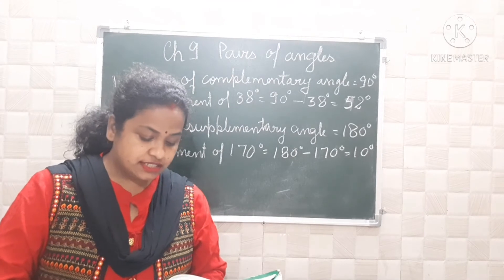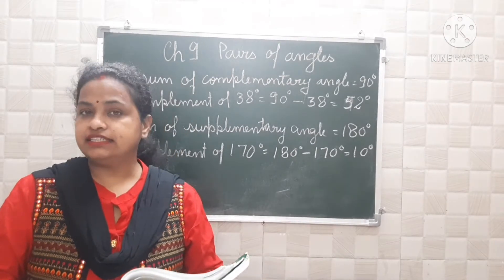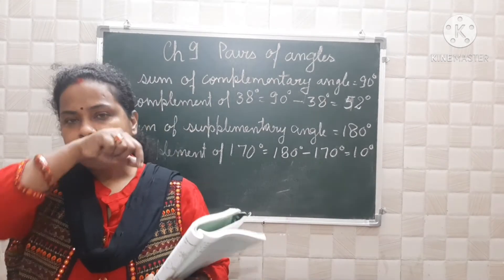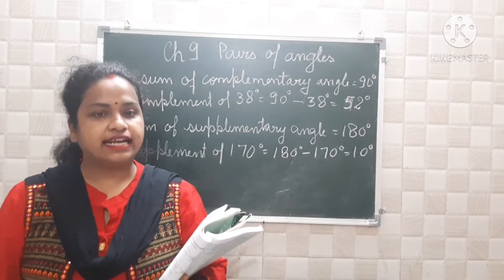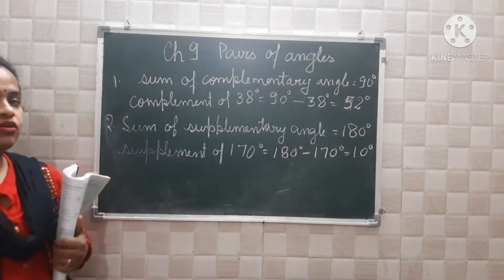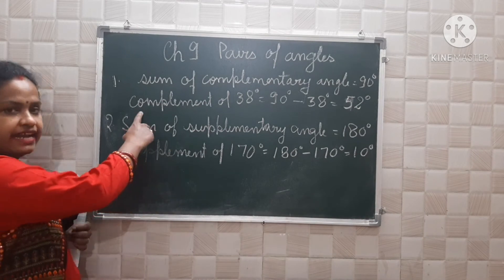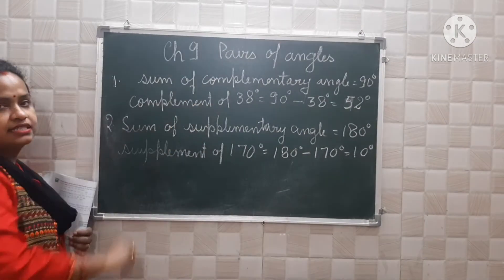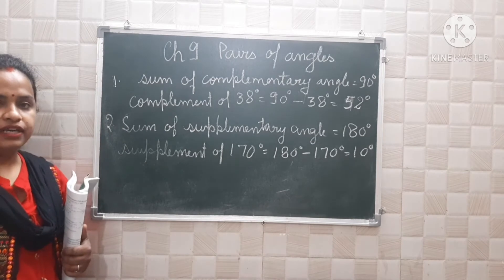What is the measure of the complement of 38 degrees? I have already told that complementary angle sum is equal to 90 degrees. So the complement of 38 degrees will be 90 minus 38 degrees, that is equal to 52 degrees.